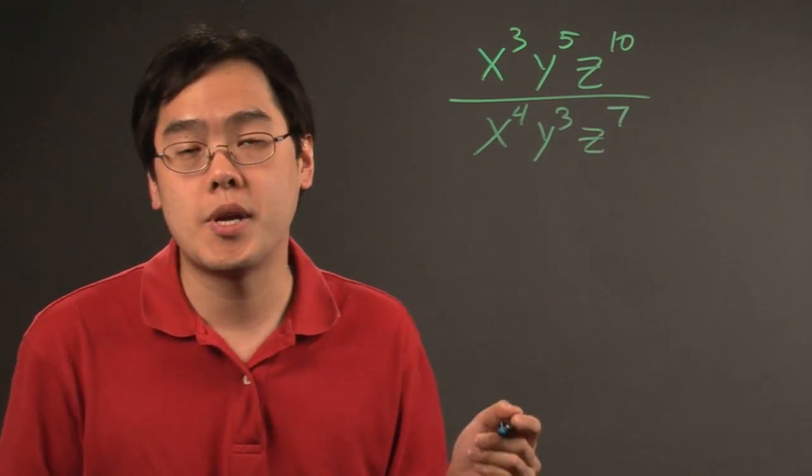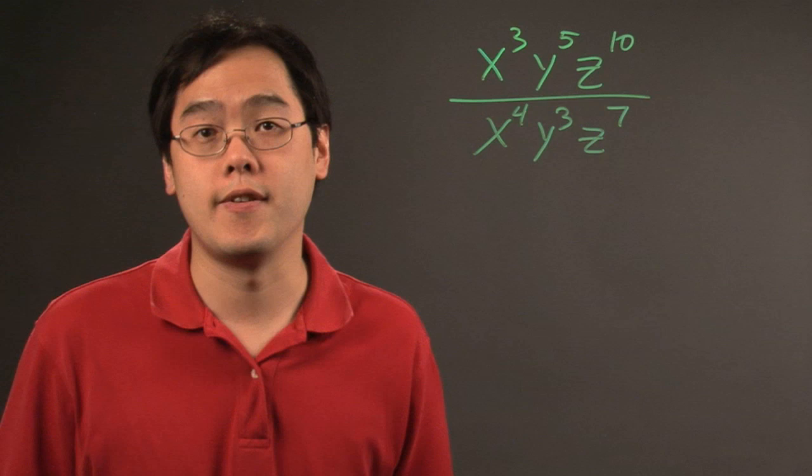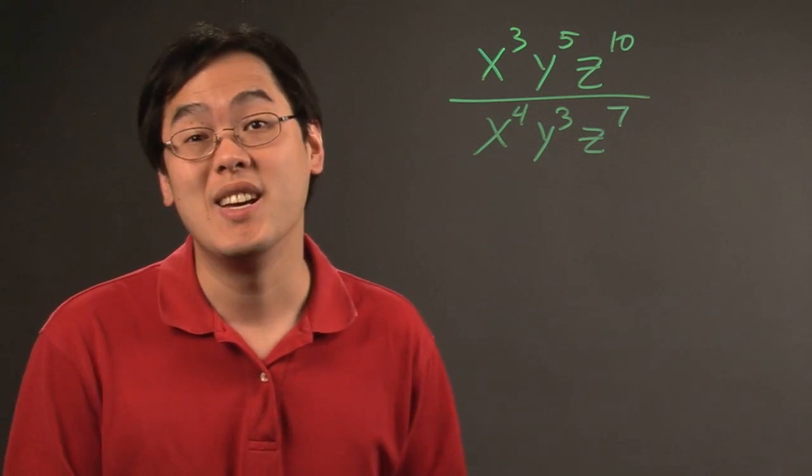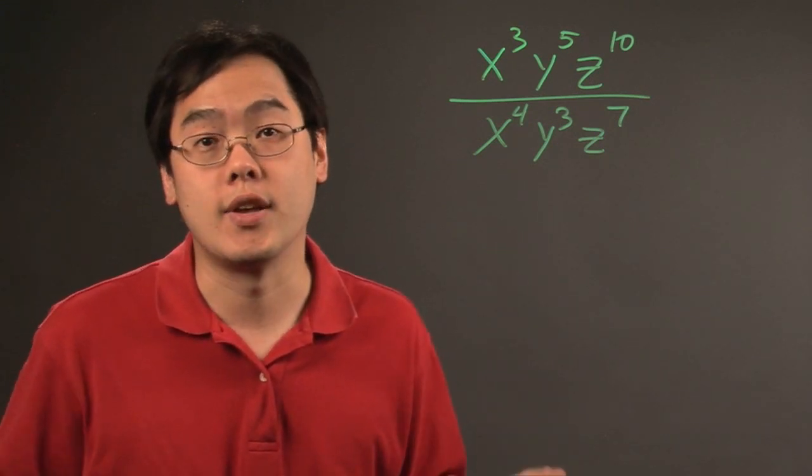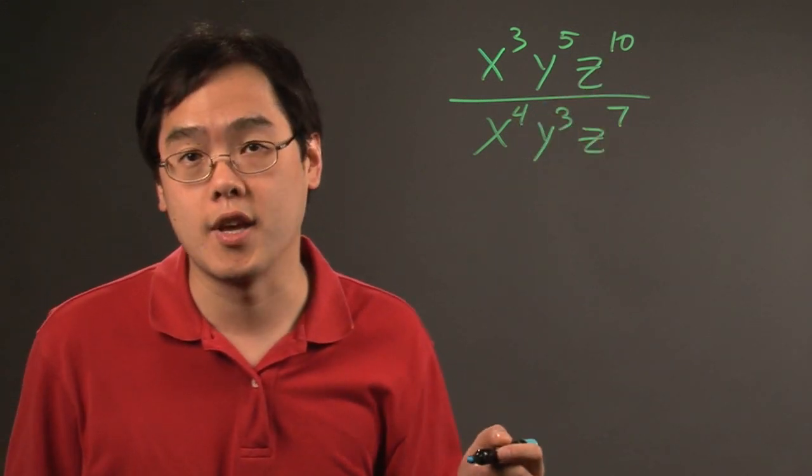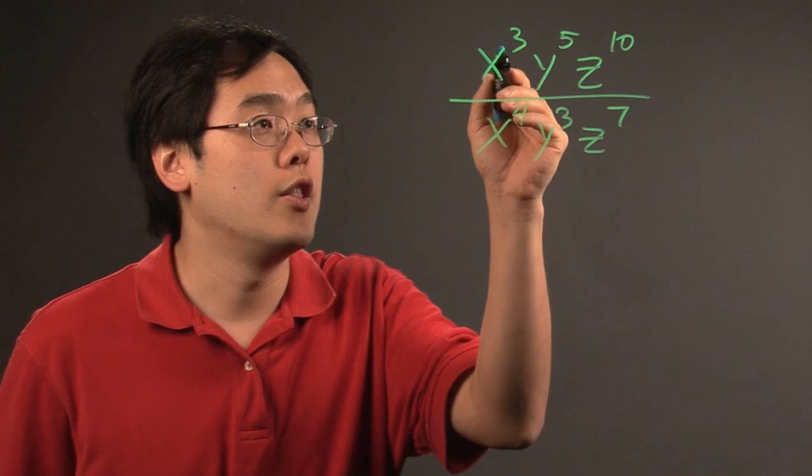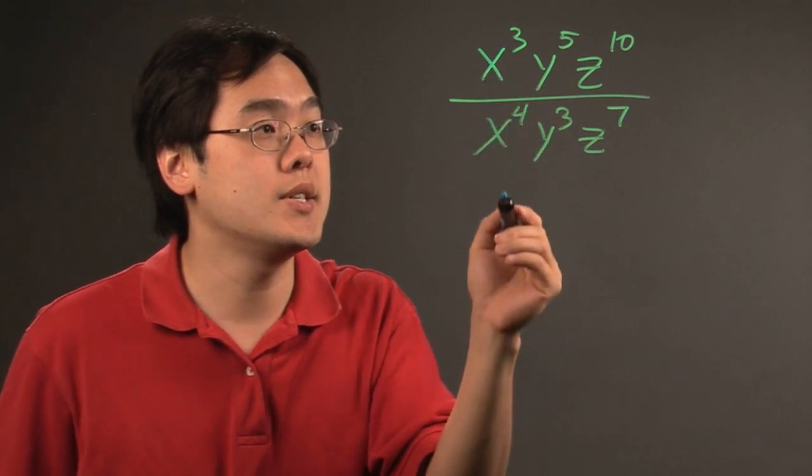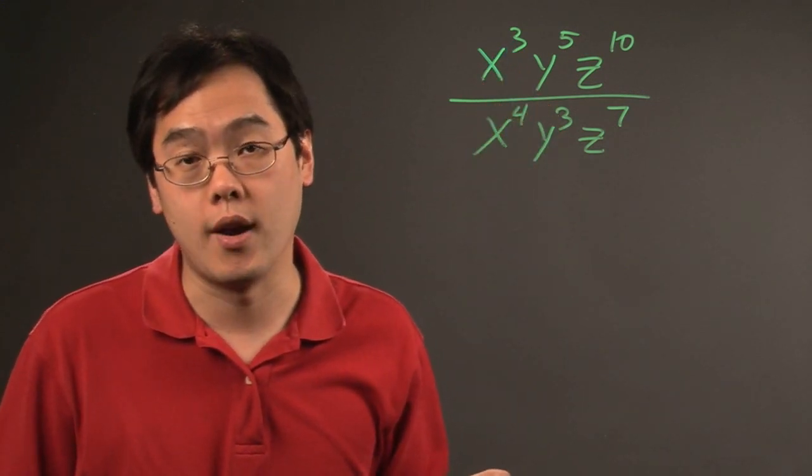Now, like I said, these terms are separated by multiplication and division. If it was separated by addition or subtraction, you pretty much have to leave it as they are because you can't really simplify too much with that. However, since they're all multiplied together, you can look at the variables with like bases and simplify the respective exponents from there.